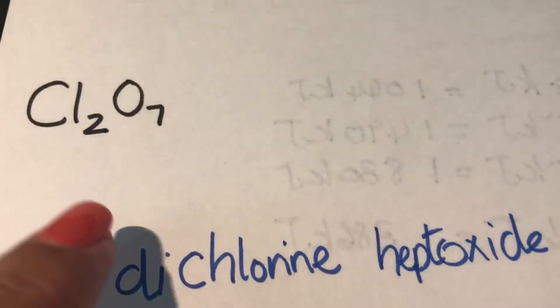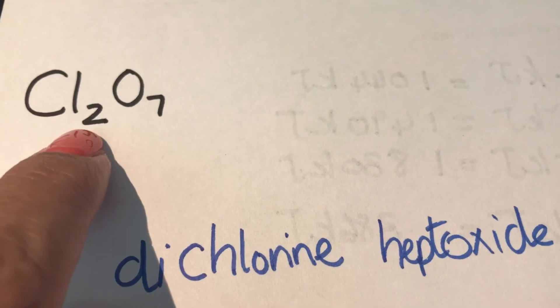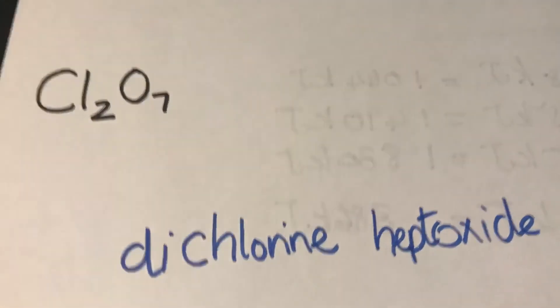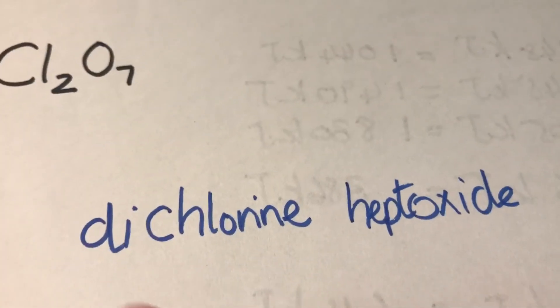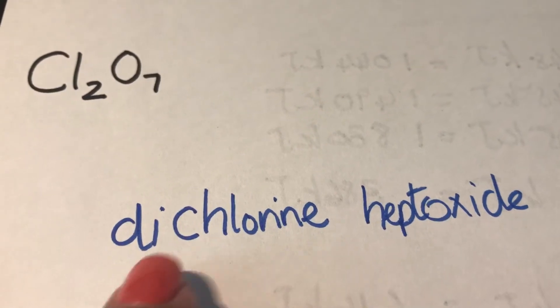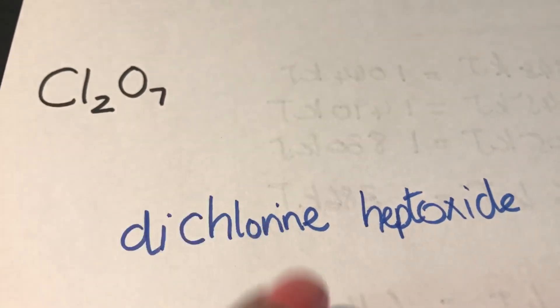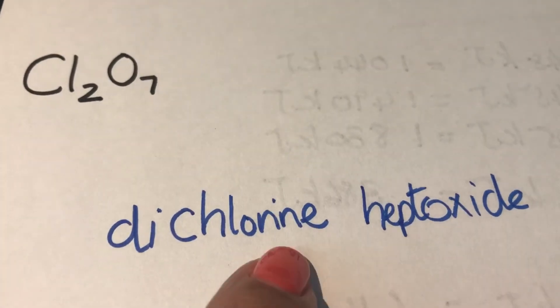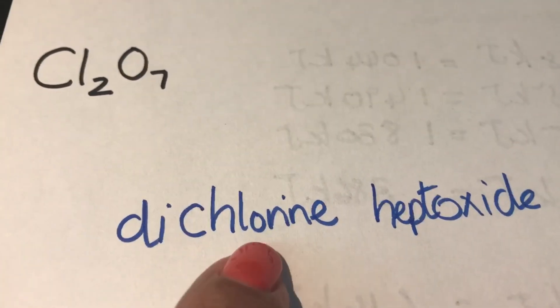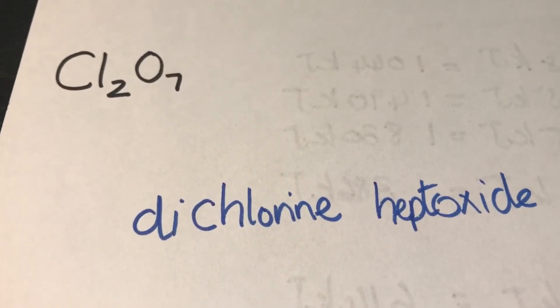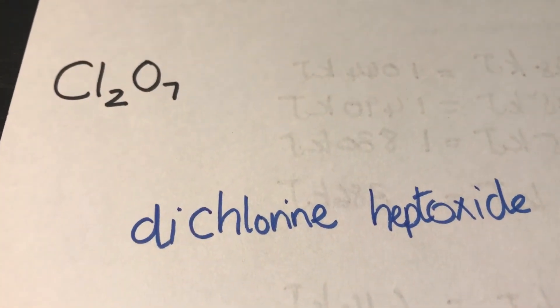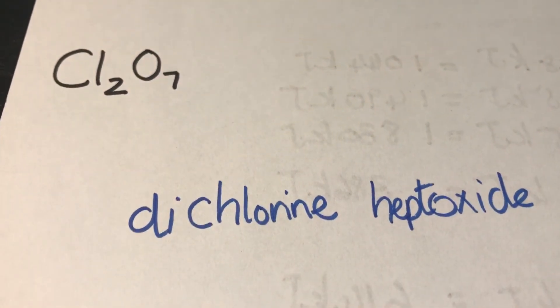But if I do have more than one atom of the first element, then the first element will get a prefix. In this case, dichlorine. Remember, chlorine is now in the beginning. It does not become chloride. It remains chlorine. So it's dichlorine heptoxide. Do not forget that - you do not change the name.